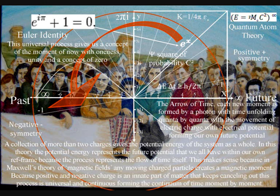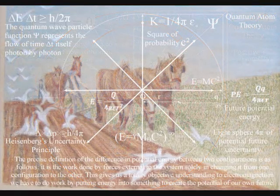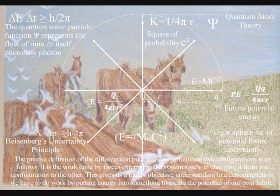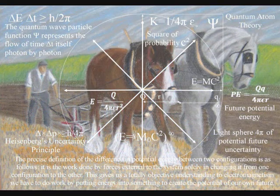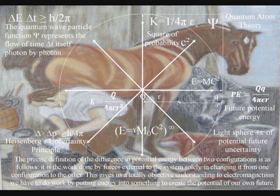The precise definition of the difference in potential energy between two configurations or reference frames is as follows: it is the work done by a force external to the system, solely in changing it from one configuration to the other. This gives us a totally objective understanding of the electromagnetic force. We have to do work by putting energy into something to create the potential of our own future within that reference frame.